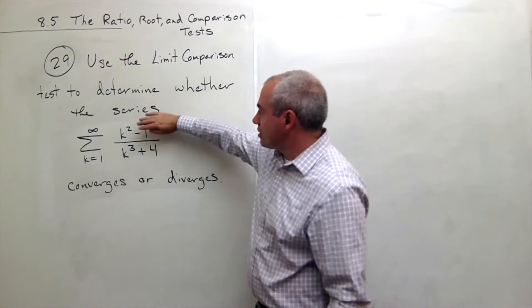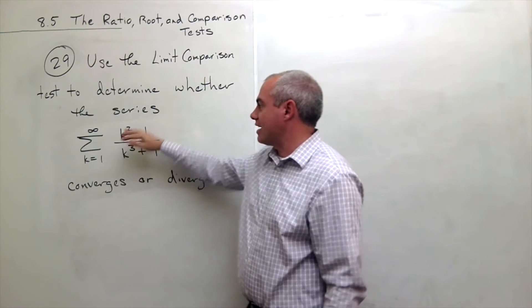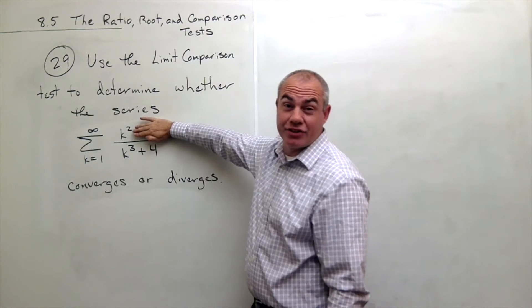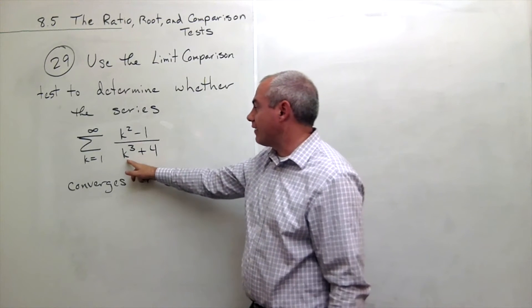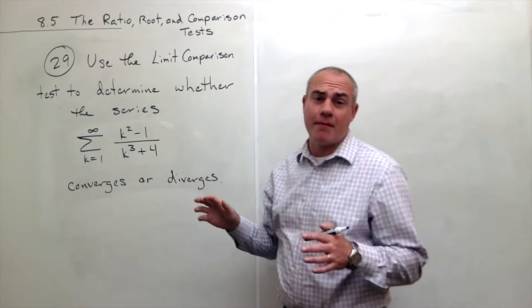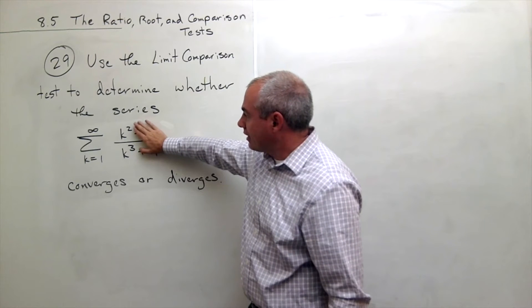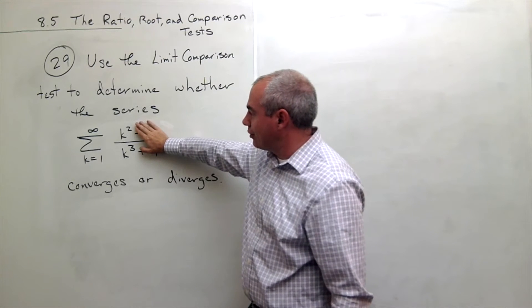Now, if this negative 1 were not there, I see the highest power here is k squared. So let's just imagine it was just k squared. And on the bottom I have k cubed plus 4, but the 4 really isn't doing that much when k gets big. So let's say that the 4 weren't there either. Then I just have k squared over k cubed.